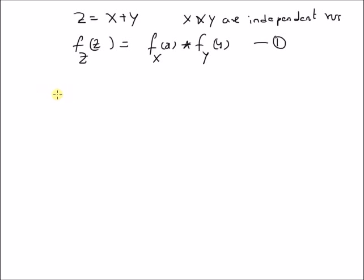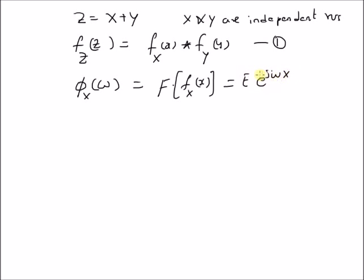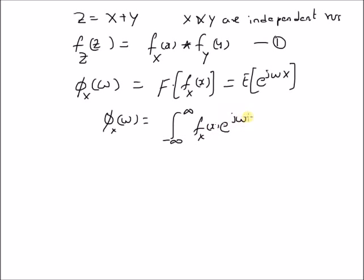Starting with the characteristic functions of X and Y: the characteristic function of X, φ_X(ω), is equal to the Fourier transform of f_X(x), which is basically equal to the expectation of e^(jωX). In other words, φ_X(ω) is equal to the integral from minus infinity to plus infinity of f_X(x) · e^(jωX) dx. Note that this definition is slightly different from the traditional Fourier transform — the basis function e^(jωX) has a positive sign here instead of a negative sign.